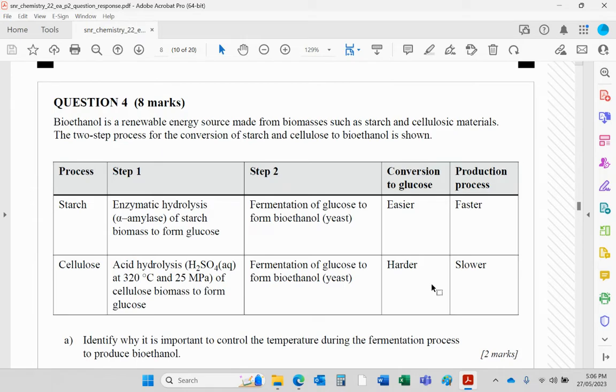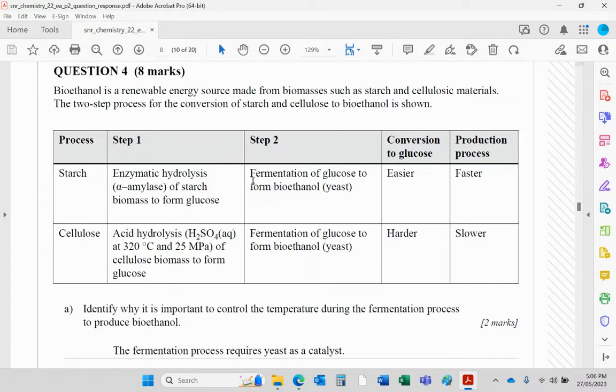Question four, bioethanol is a renewable energy source made from biomasses such as starch and cellulosic materials. Two-step process for the conversion of starch and cellulosic to bioethanol is shown. So the first thing we do basically is break the starch up into glucose by breaking all the glycosidic bonds. And then step two is where we ferment the glucose to form ethanol, bioethanol, because it's come from a biosource.